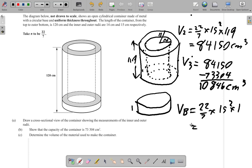22 over 7 times 15 squared times 1. So 22 over 7 times 15 squared times 1 and I have 707.143 cm cube.